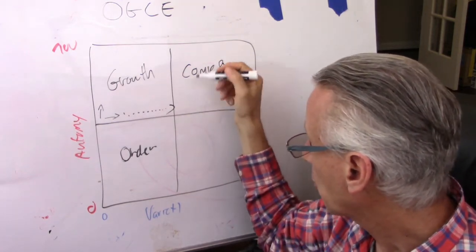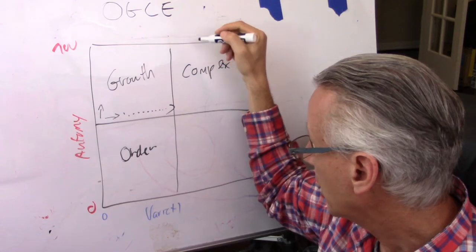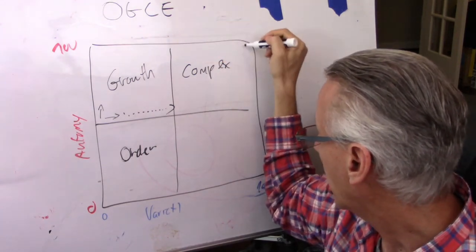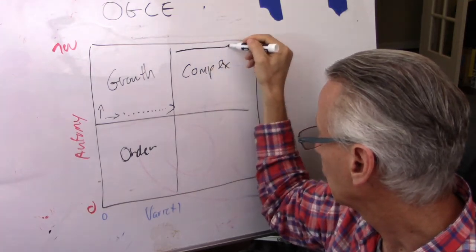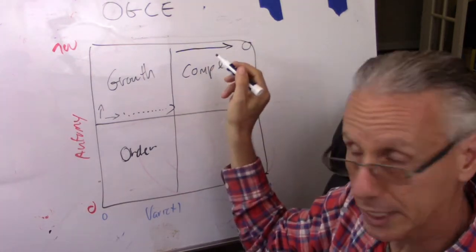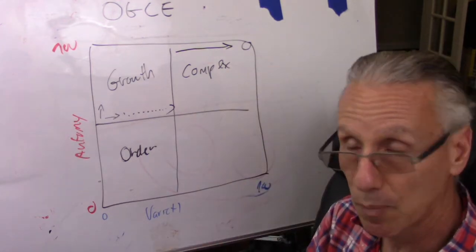And in complex, we are going to have high autonomy and high variety. We don't have to reach the peak, but definitely we are in complexity.